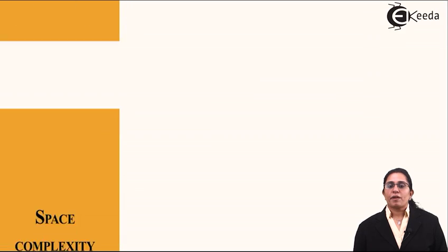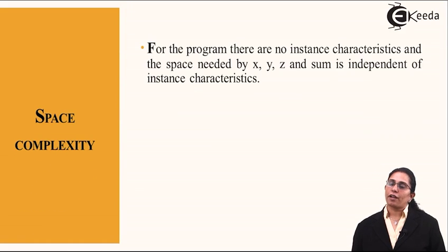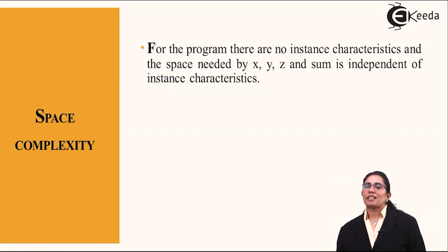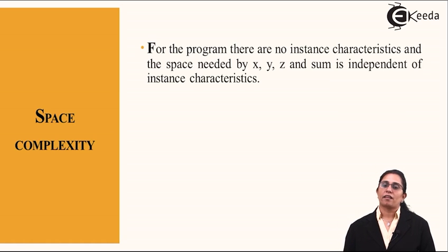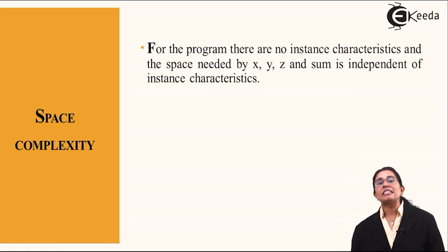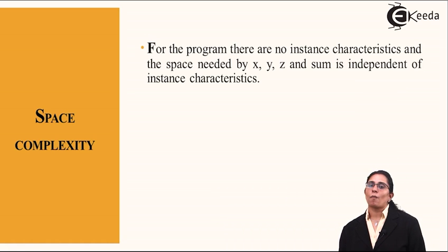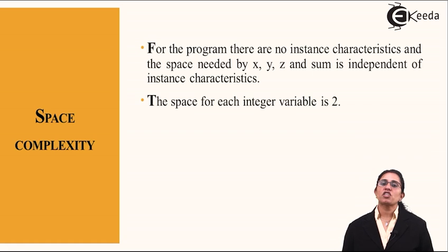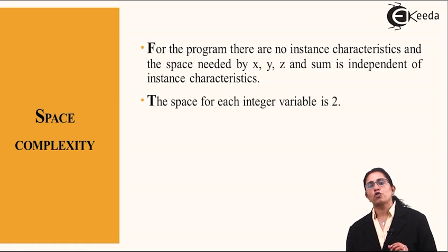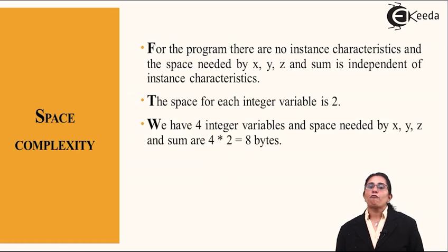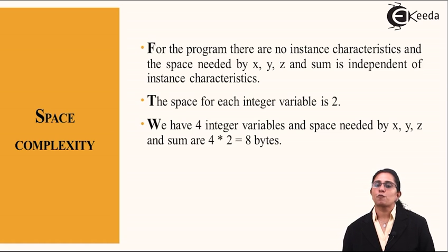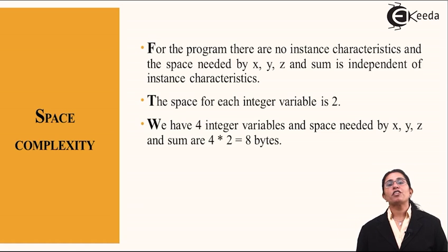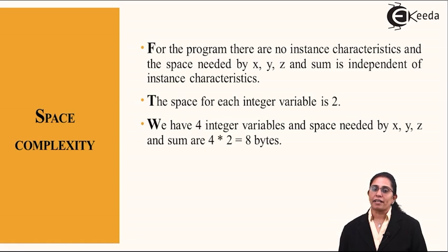If we consider the space complexity for the program, for the program there are no instance characteristics, and the space needed by x, y, z, and sum is independent of the instance characteristics. That is, all three values and the sum are independent. The space for each integer variable is 2. We have four integer variables and space needed by them are 4 times 2, which is 8 bytes.